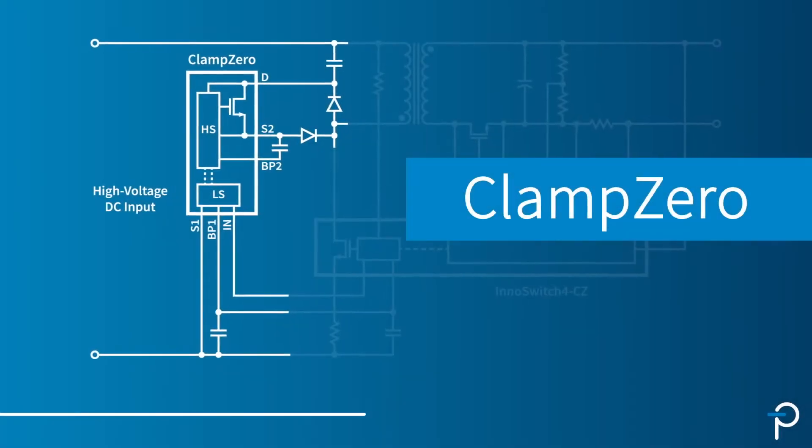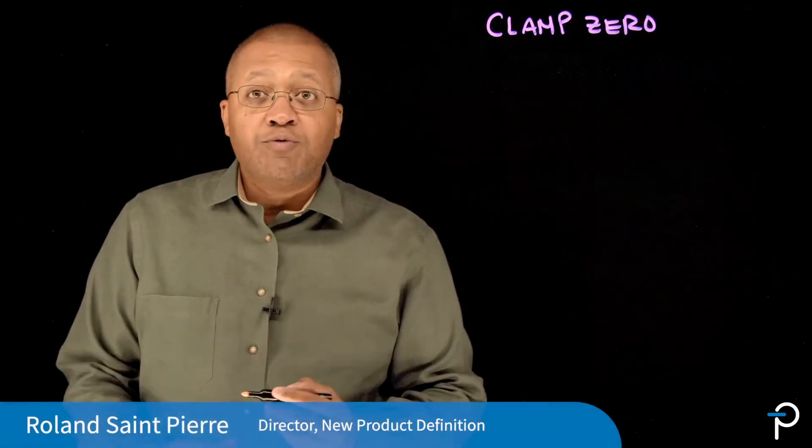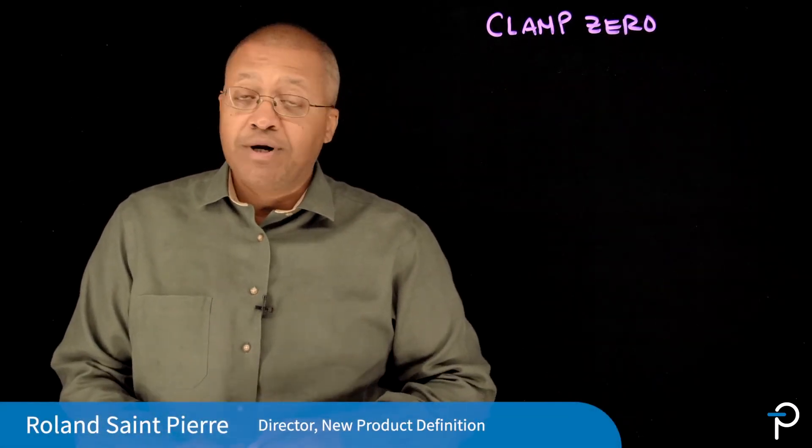ClampZero is a companion IC for the InnoSwitch 4 for a zero-voltage switched flyback solution, or an active clamp. And why would I want that?